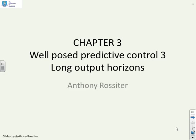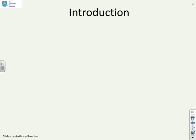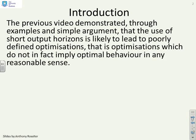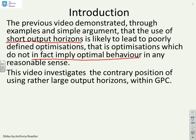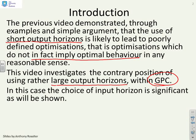This video looks at how well-posed predictive control is when you use long output horizons. The previous video demonstrated through examples that the use of short output horizons is likely to lead to poorly defined optimizations - optimizations which do not imply optimal behavior in any reasonable sense. This video investigates the contrary position of using large output horizons, and in particular we are focusing on GPC type algorithms. In this case, the choice of the input horizon is more significant as will be shown.